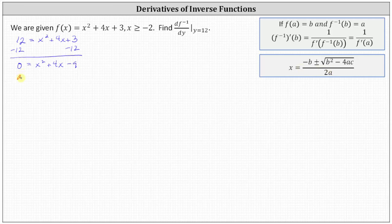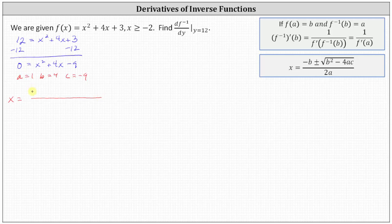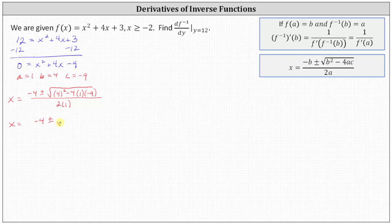In our case, a is equal to one, b is equal to four, and c equals negative nine, which gives us x equals negative b, which is negative four, plus or minus the square root of the quantity b squared — that's four squared — minus four times a, which is one, times c, which is negative nine, all divided by two times a, which is two times one. Simplifying, we have x equals negative four plus or minus the square root of 16 plus 36, which equals 52, divided by two.